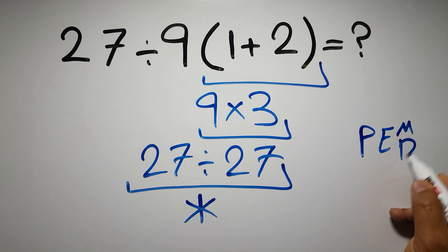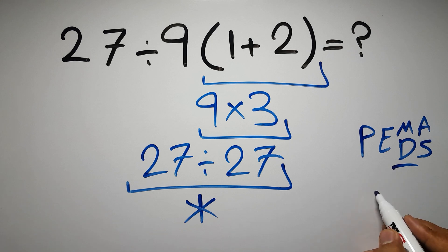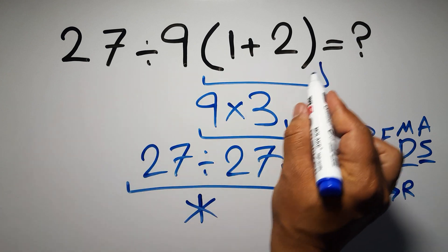Then multiplication or division, and finally addition or subtraction. Remember that multiplication and division have equal priority and we have to work from left to right. The same applies to addition and subtraction.